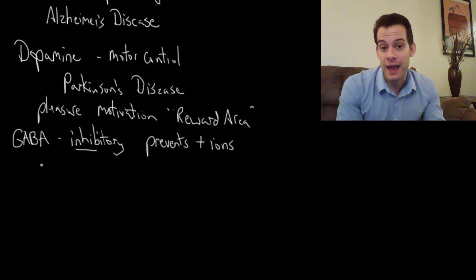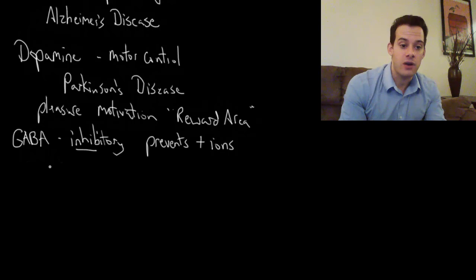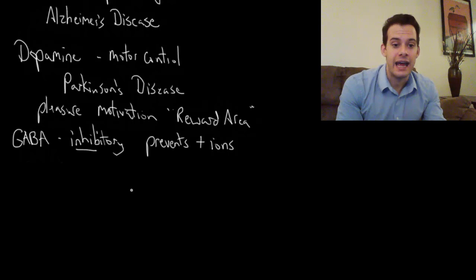We'll talk about GABA again when we talk about alcohol. One of the things that alcohol does is it causes GABA to be more active and this inhibits function of some brain areas.